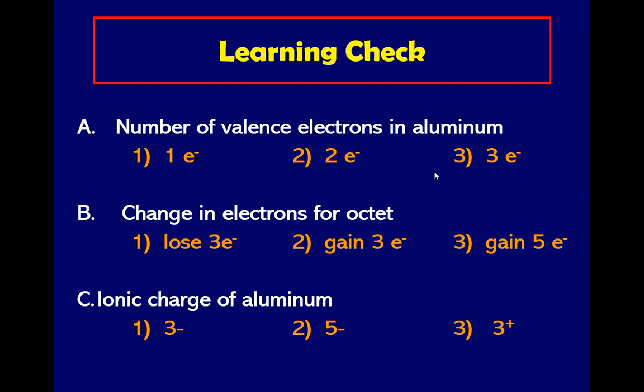Now let's have a learning check. Number of valence electrons in aluminum: is it one electron, two electrons, or three electrons? How about letter B, change in electrons for octet: does it lose three electrons, gain three electrons, or gain five electrons? What is the ionic charge of aluminum: is it negative three, negative five, or positive three?